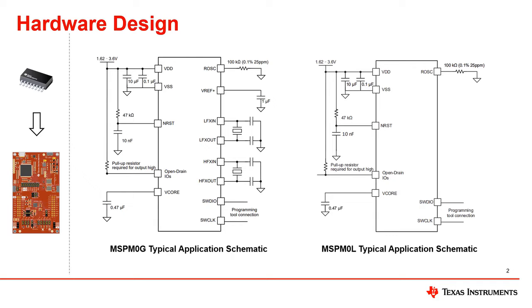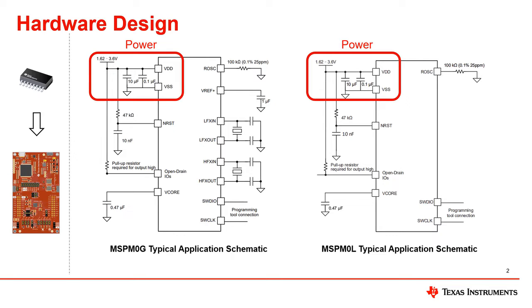Let's start by the common points in hardware design. First are the power supply pins. We recommend to connect two filter capacitors on the VDD VSS pins with values of 10 microfarad and 0.1 microfarad respectively, with the 0.1 microfarad capacitor placed close to the MCU VDD pin in your layout.